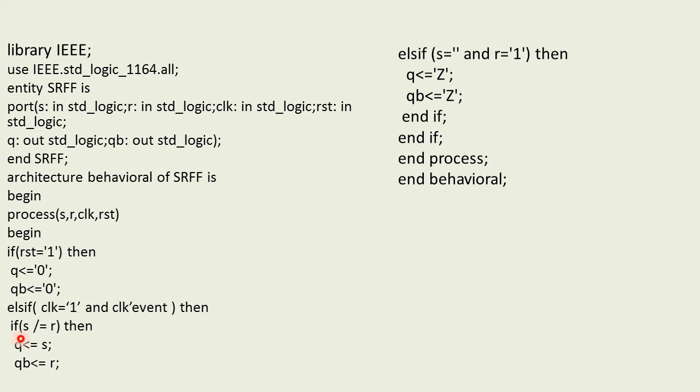We write the condition: if S is not equal to R. That means the values of S and R are not going to be same. In two conditions this will be satisfied: when S is 0 and R is 1, and when S is 1 and R is 0. In both conditions, our normal output should equal S and inverted output should equal R.